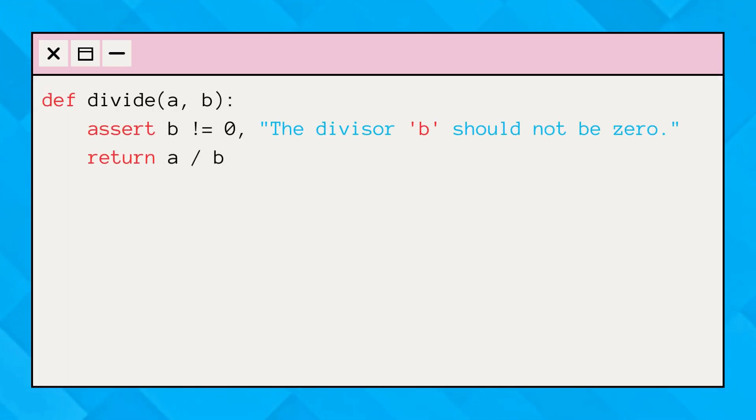Let's define an assert statement using a basic example. Here we have a function that divides two numbers. Before performing the division, we use an assert statement to check that the divisor B is not zero. If B is zero, the assert statement will raise an assertion error with a custom error message. Simple, right?